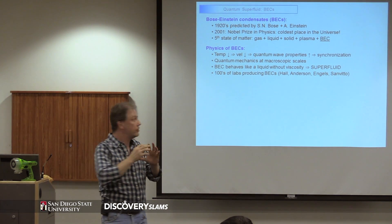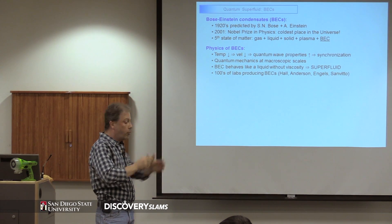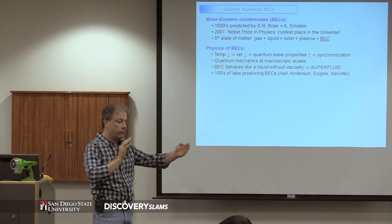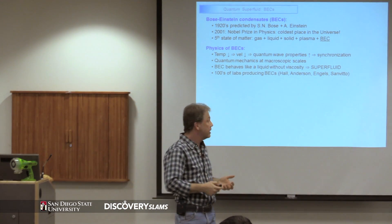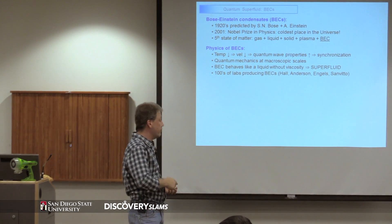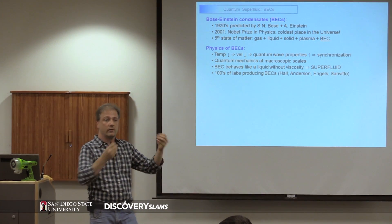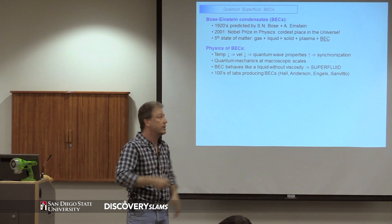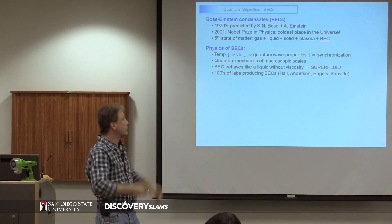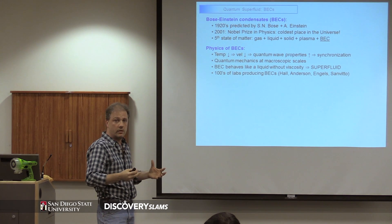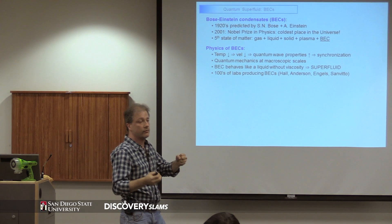And the reason that this wave comes into play is that the wavelength of this wave — the spatial extent of this wave — is actually proportional to 1 over the velocity. So if the temperature decreases and the velocity decreases, then this wavelength increases. So as you have these particles in the system with a very large wavelength, these particles actually start to communicate with each other. And if the temperature is low enough, they all synchronize.